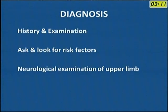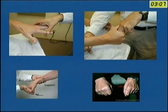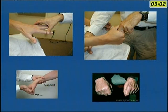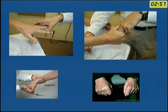Diagnosis is by history, examination, looking for risk factors, and neurological examination of the upper limb. Examination includes testing all palmar interossei and the medial two lumbricals, looking for abduction of the index finger using the first dorsal interosseus, and assessing the overall power of the hand.